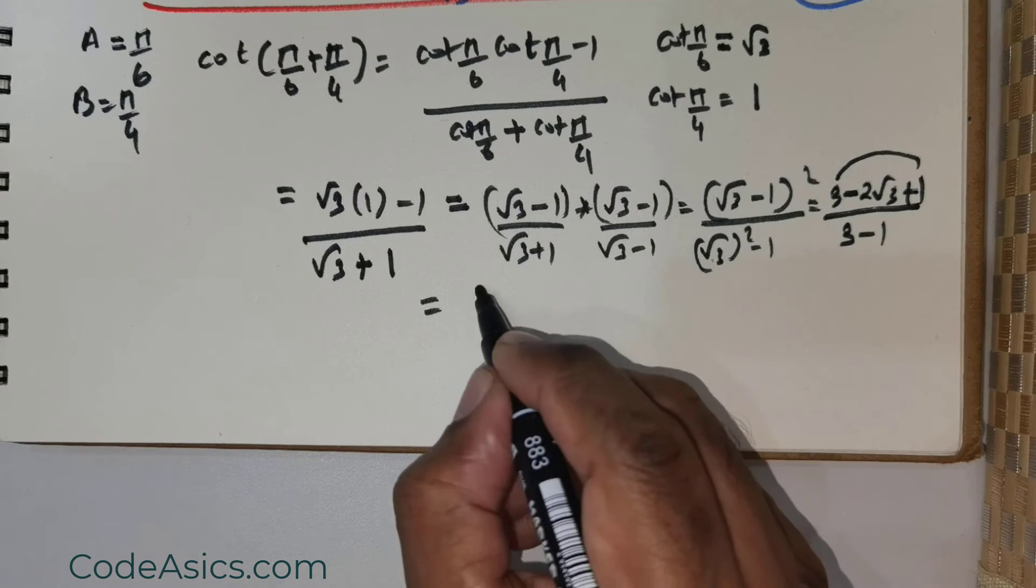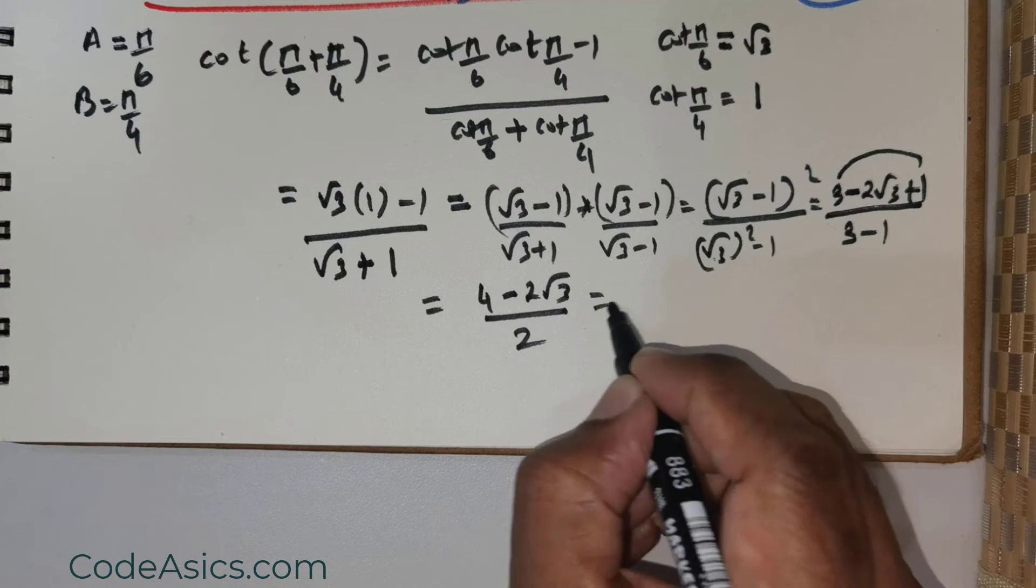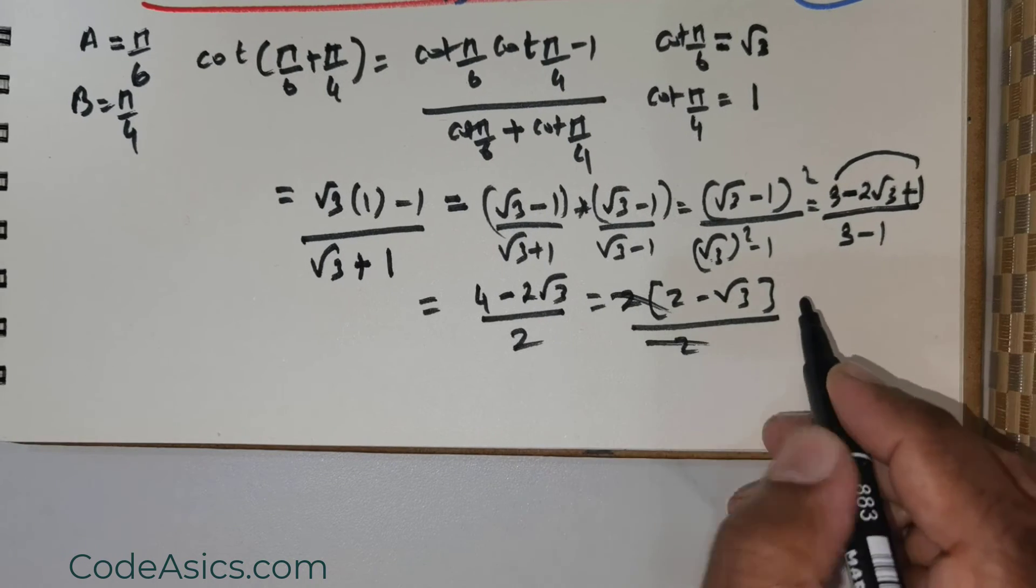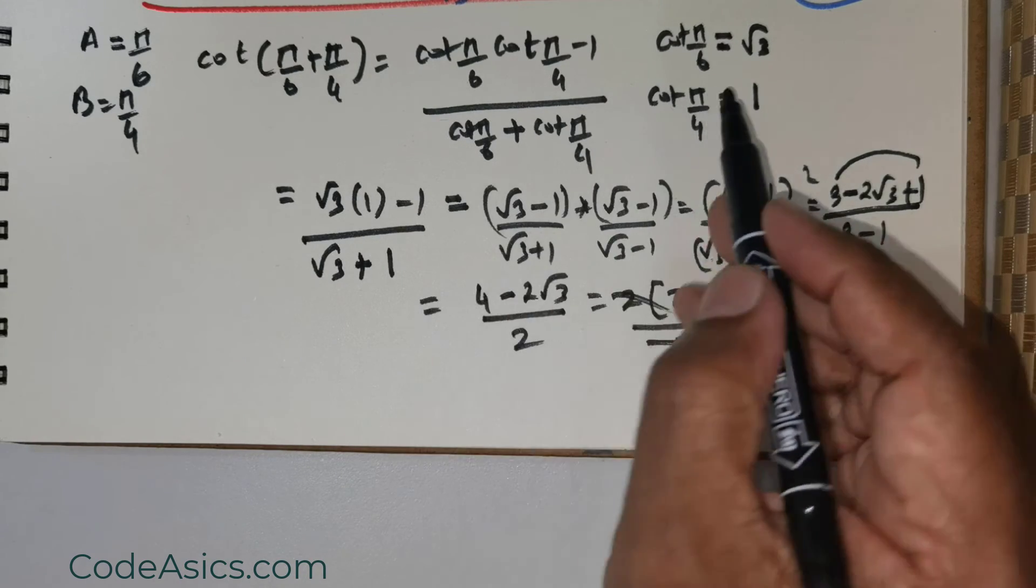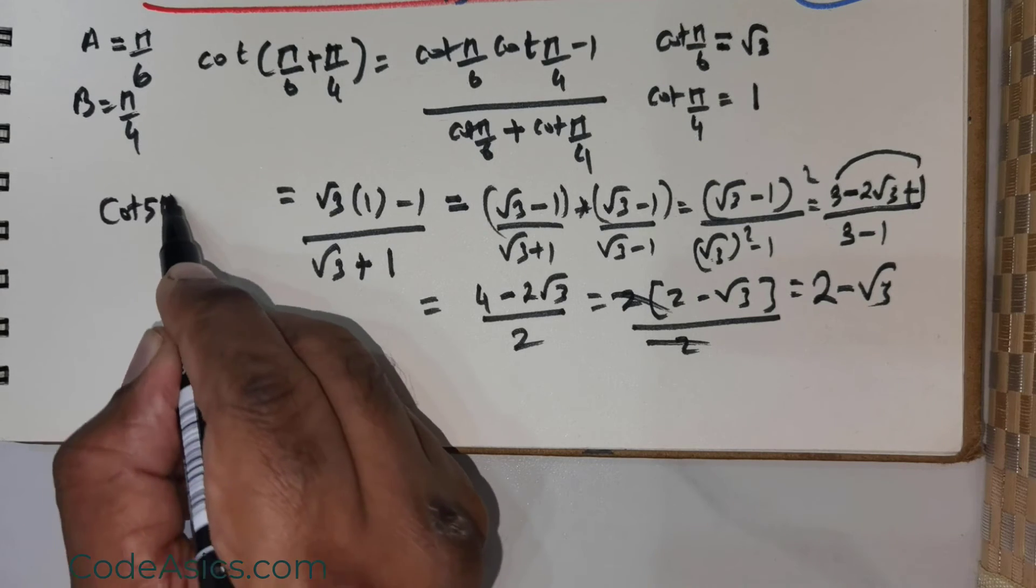So what do I have here? I've got 3 + 1, that's 4 - 2√3, divided by 2. If I were to take 2 out, I would get 2(2 - √3)/2. The 2s cancel, giving me 2 - √3. This is the value for cot(5π/12).